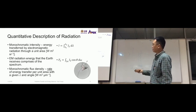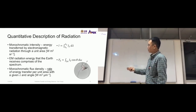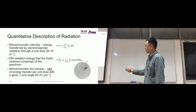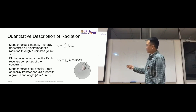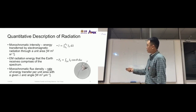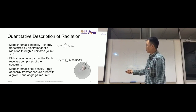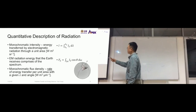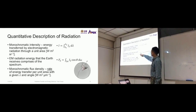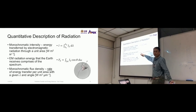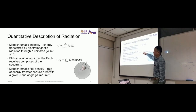Electromagnetic radiation energy that the earth receives comprises the full spectrum. Besides intensity, there's also flux density — the monochromatic flux density is the rate of energy transfer per unit area for a given wavelength lambda. This is almost the same as intensity except it's per unit area. The flux density at a certain lambda range — say for the color blue or red — equals the intensity here...